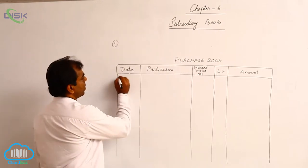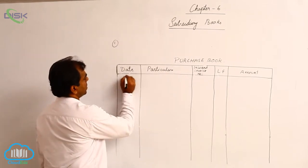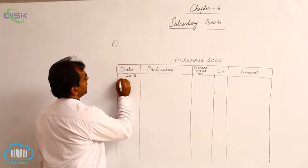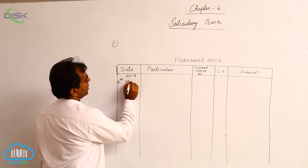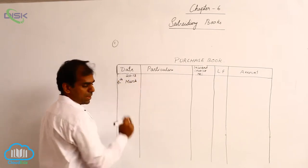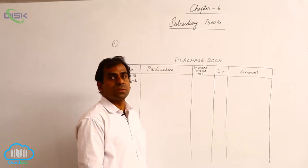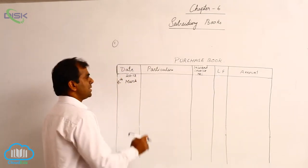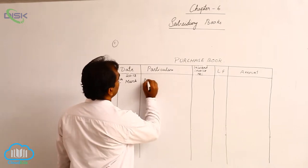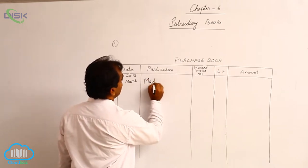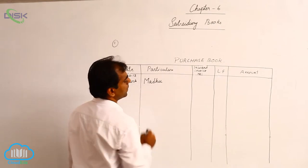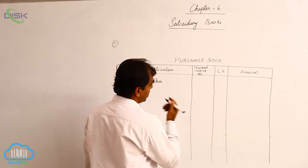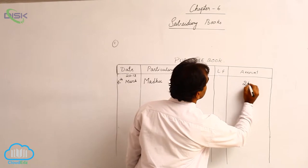The first transaction is on 4th March. 2013 being the year common, I will take it as 4th March and give the date. Purchased goods from Madhu — clearly it is a credit purchase. So I will write the name of Madhu and then enter the amount in the amount column: 2,500.